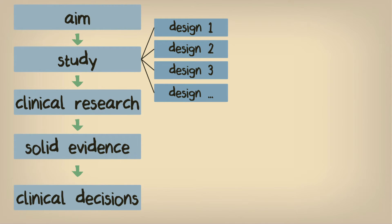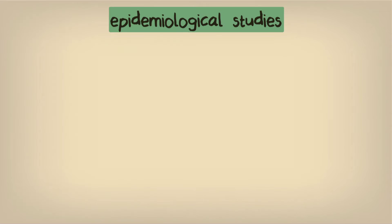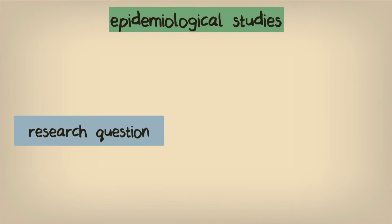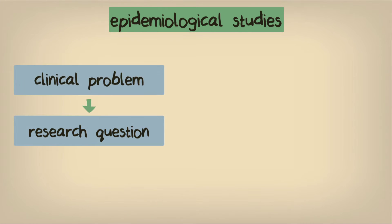The first stage of any epidemiological study is to derive the question or questions that you aim to answer. The research question you choose should be based directly on a clinical problem that you believe could be solved, at least in part, with more evidence.